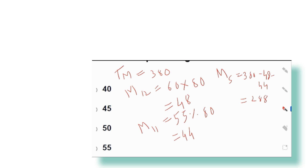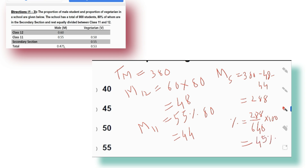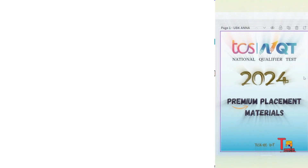So 288 male students are in the secondary section. To find the percentage: total students in the secondary section is 640, total male students is 288, so percentage equals 288 divided by 640 multiplied by 100, which gives 45 percent. I hope you understood the shortcuts and how questions are asked in TCS NQT. Please subscribe, watch the TCS NQT playlist, and share this content with your friends.